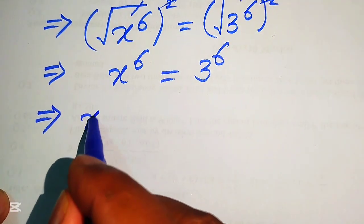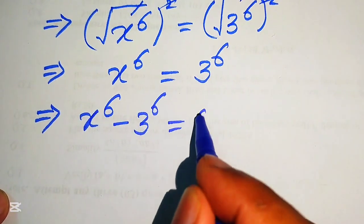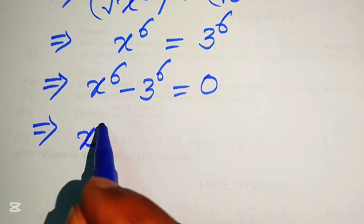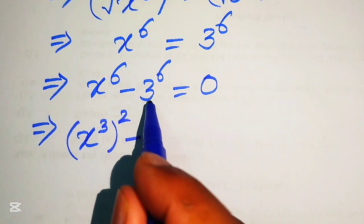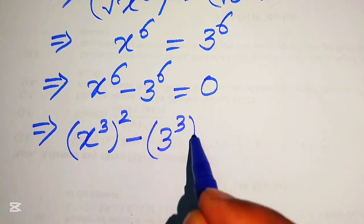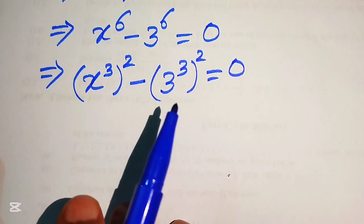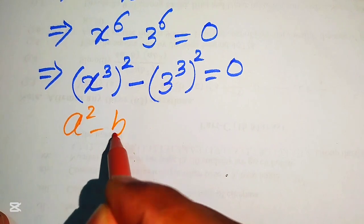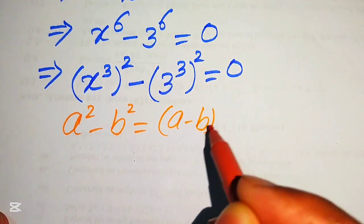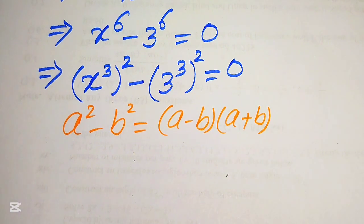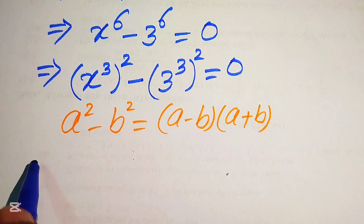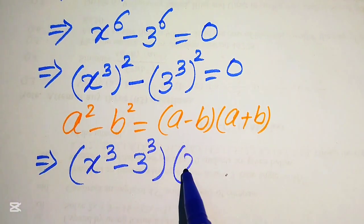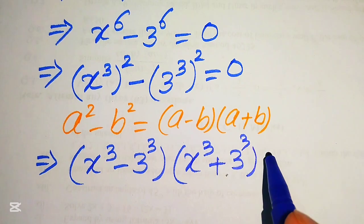In the next step we move 3 to the power of 6 to the left hand side, so it will be written as x to the power of 6 minus 3 to the power of 6 equals 0. We rewrite this as x cubed squared minus 3 cubed squared equals 0, and now we apply the algebraic formula: a squared minus b squared equals a minus b times a plus b.